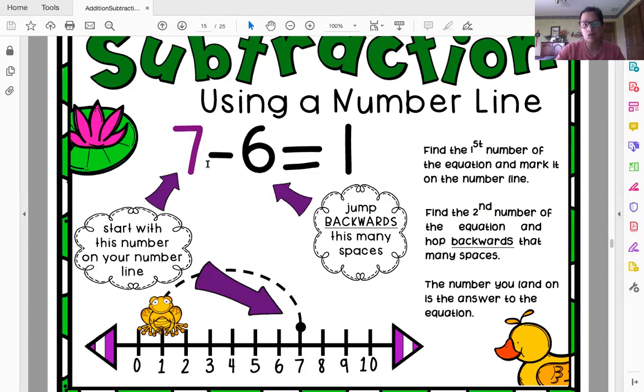So the first number is seven. It's in a purple color to help us. Seven. So I'm going to go to my number line. I'm going to look for seven. It's right there. So I'm going to just add a little dot with my pencil or my crayon. So I know where I start.